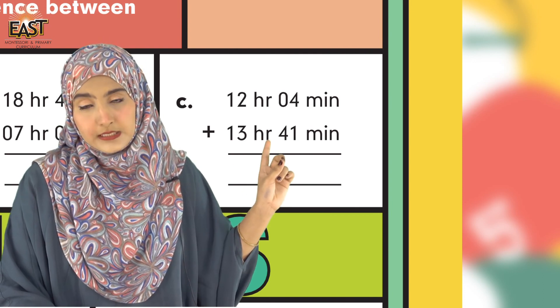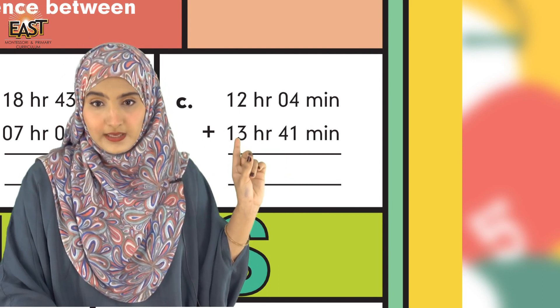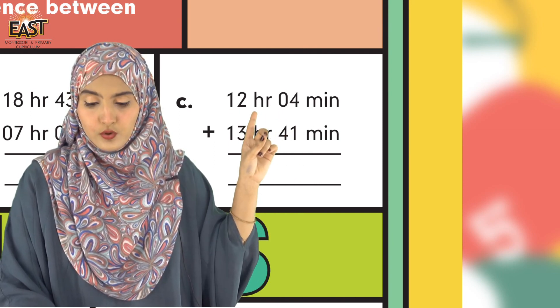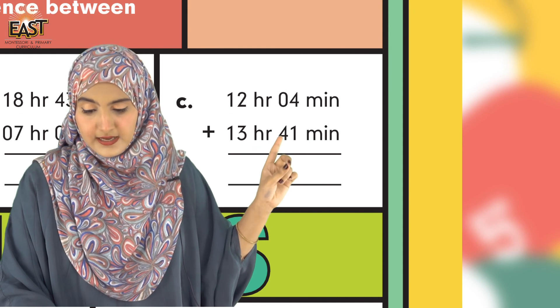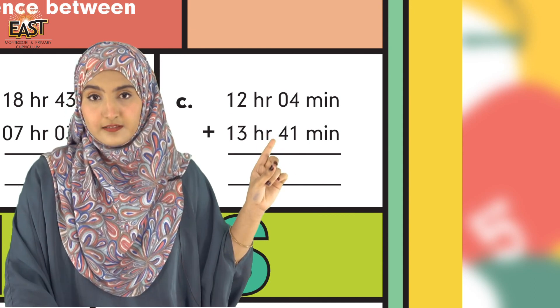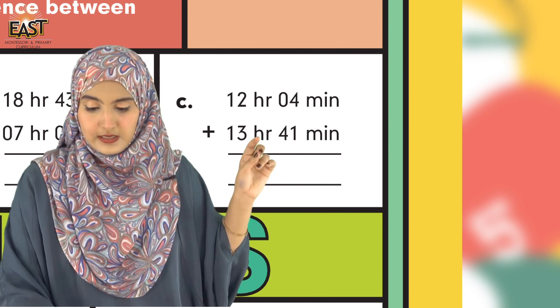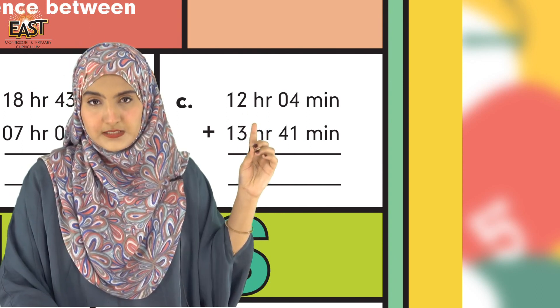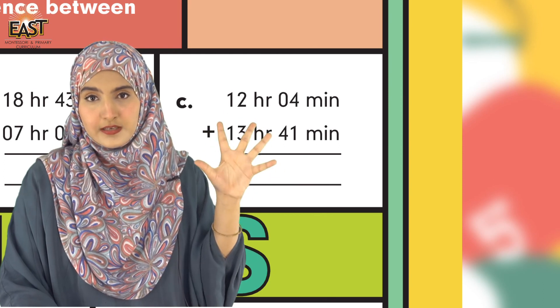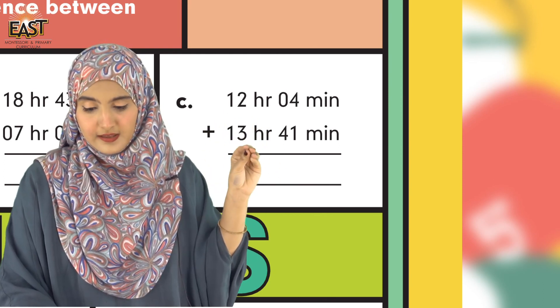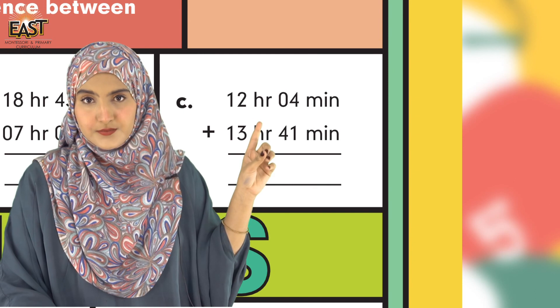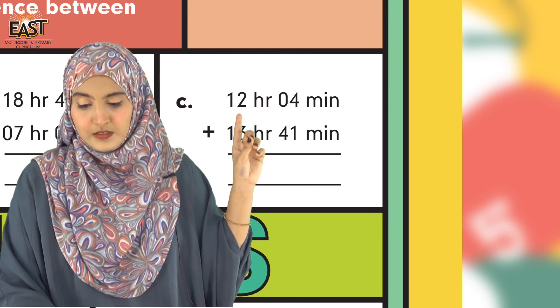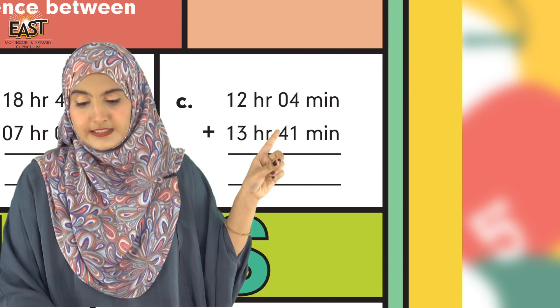You have added, not subtracted. In addition, 4 plus 1 gives us 5. 4 plus 1 is 5 altogether. 0 plus 4 gives us 4, so 45 minutes. 12 hr and 13 hr: 3 plus 2 is 5, 1 plus 1 is 2, so 25 hr.